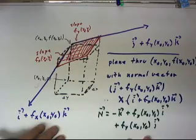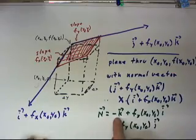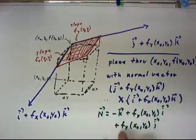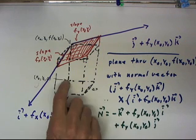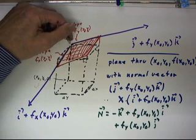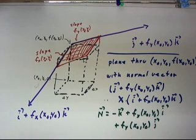So we have a perfectly good normal vector, negative k plus f_x i plus f_y j. Where f_x and f_y are both evaluated at our point x₀, y₀ because of course it's at that point that we calculated the instantaneous slopes.